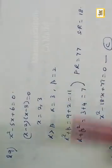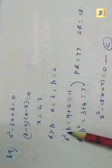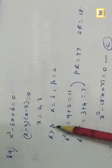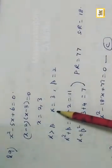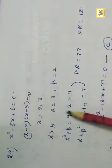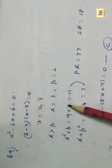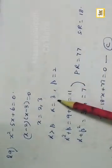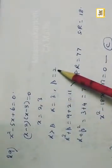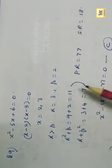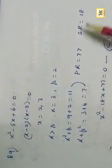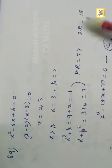We need the equation with roots alpha²+beta and alpha+beta². Alpha²+beta = 9+2 = 11. Alpha+beta² = 3+4 = 7.